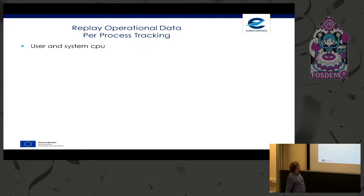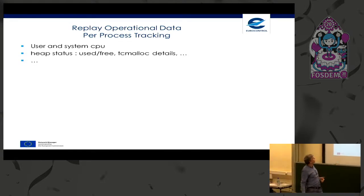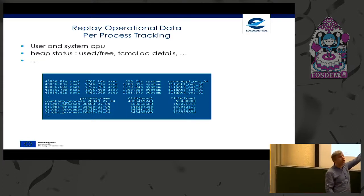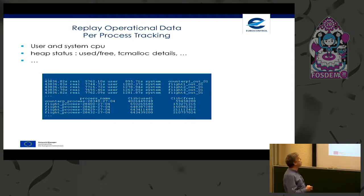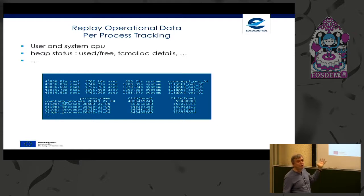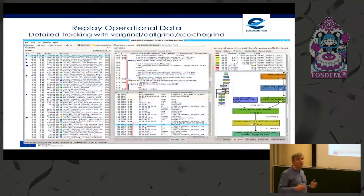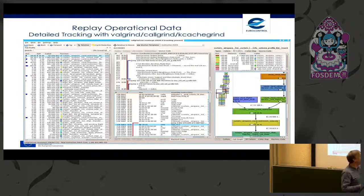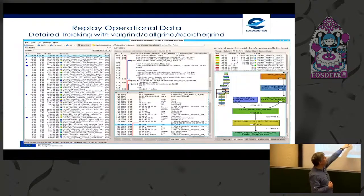We also have per-process tracking where we record user and system CPU, heap status (how much was used and free), and TC malloc details. This lets us see which process increased if we see a difference on the global graph. The third level is when we need to analyze what happened inside a process — we run one hour of replay under Valgrind Callgrind and use the KCachegrind and Callgrind tools to record the call stack, see which functions consumed the most, and go down to assembly language level. This is our main tool for optimization and investigating degradation.